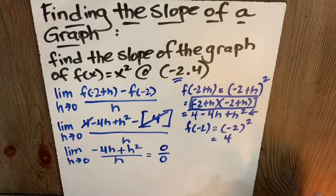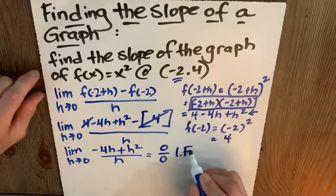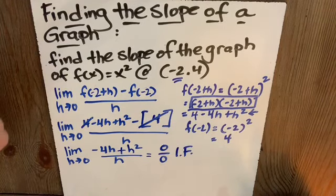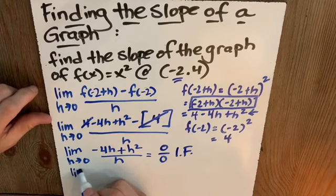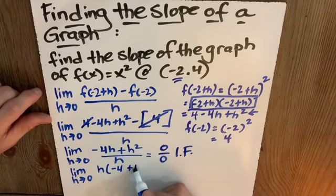Oh, but I know how to work around this. I have a plan B. I'm sorry. This is an indeterminate form, not intermediary. So I can make this the limit as h approaches 0 of h times negative 4 plus h over h.